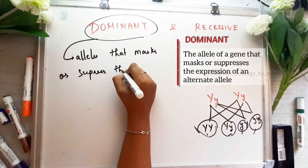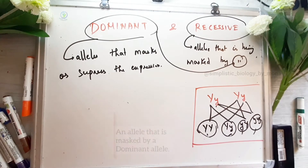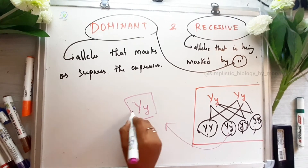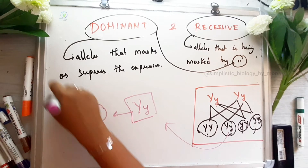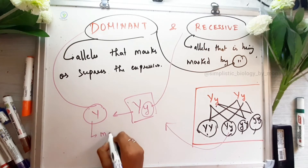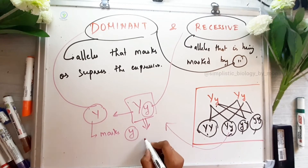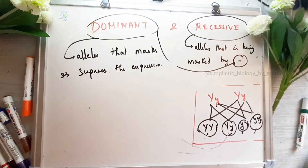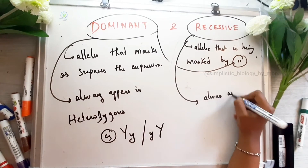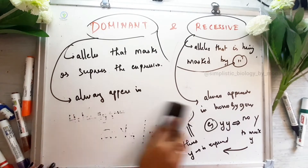The dominant gene is expressed and blocks the other. The recessive gene is blocked by the dominant gene. Capital Y is the dominant gene and small y is the recessive gene. Y is yellow color and small y is green color. The dominant character is expressed in a heterozygous gene, and the recessive character is expressed only in a homozygous recessive gene.